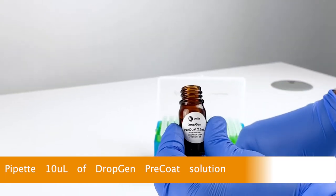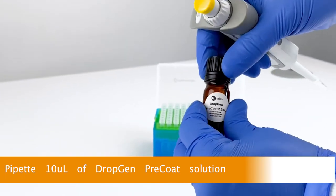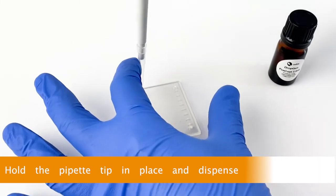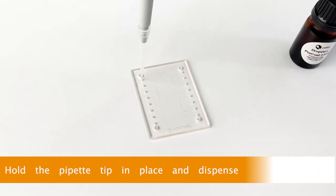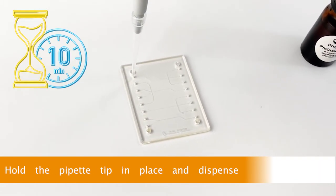Pipette 10 microliters of DropGen pre-coat. Dispense into the input port of the droplet generator as shown. Leave for 10 minutes.